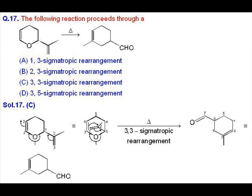Question 17: This is a 3,3-sigmatropic rearrangement reaction. The given compound is a vinyl ether, and on heating it rearranges through a cyclic transition state and converts into an aldehyde as shown in option C.